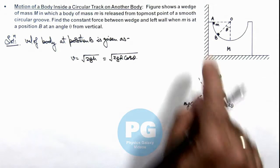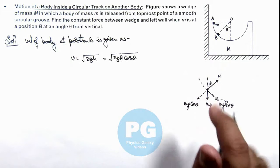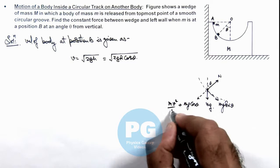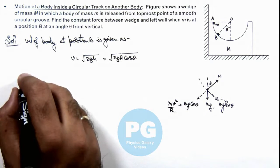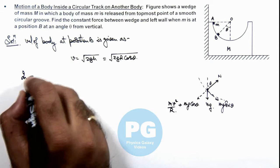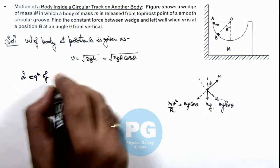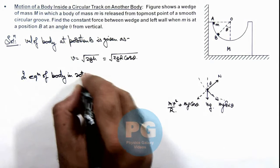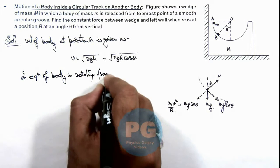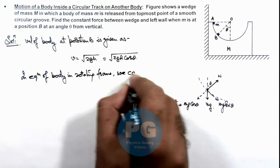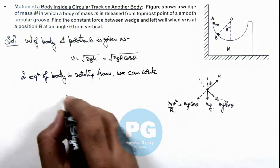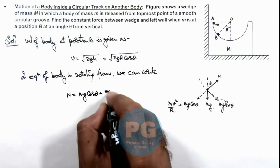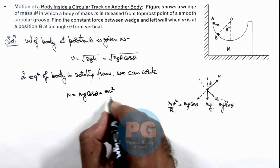So here we can write in the rotating frame if body is treated in equilibrium, it'll experience an outward centrifugal force mv²/r. In equilibrium of body in rotating frame we can write, the value of N is equal to mg cos theta plus mv²/r.